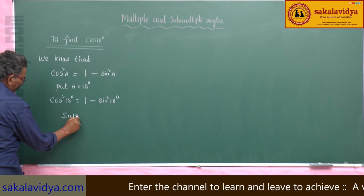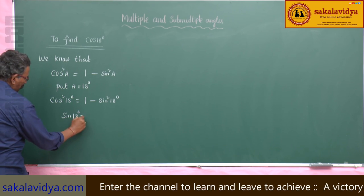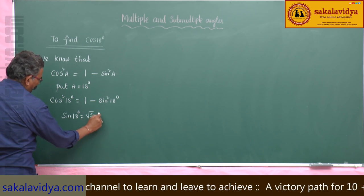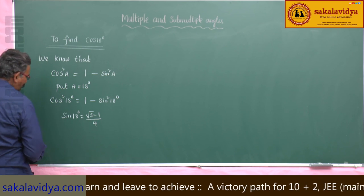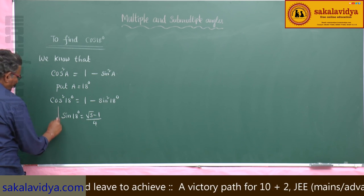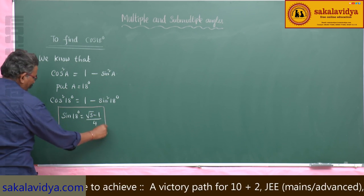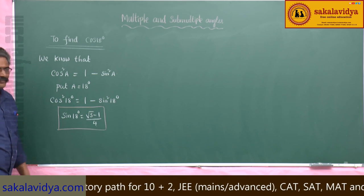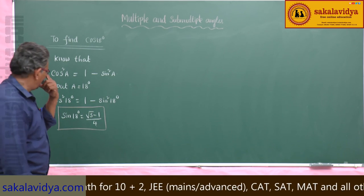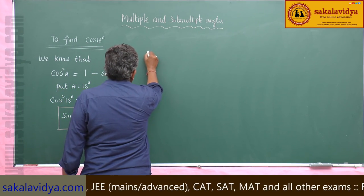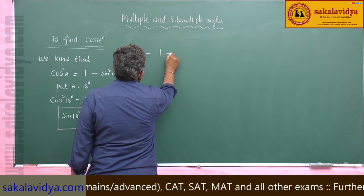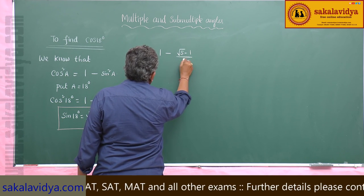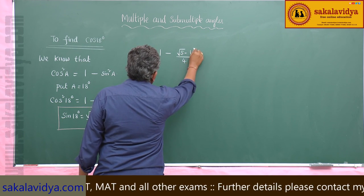What is sin 18 degrees? That is (√5 minus 1) divided by 4. Let us substitute here. We get 1 minus [(√5 minus 1) divided by 4] whole squared.